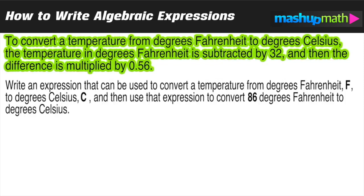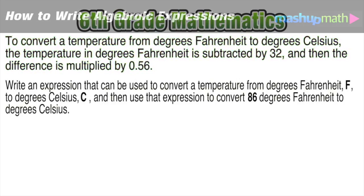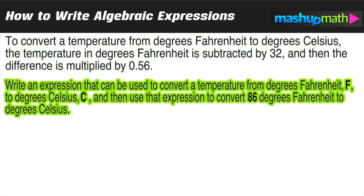To convert a temperature from degrees Fahrenheit to degrees Celsius, the temperature in degrees Fahrenheit is subtracted by 32, and then the difference is multiplied by 0.56.